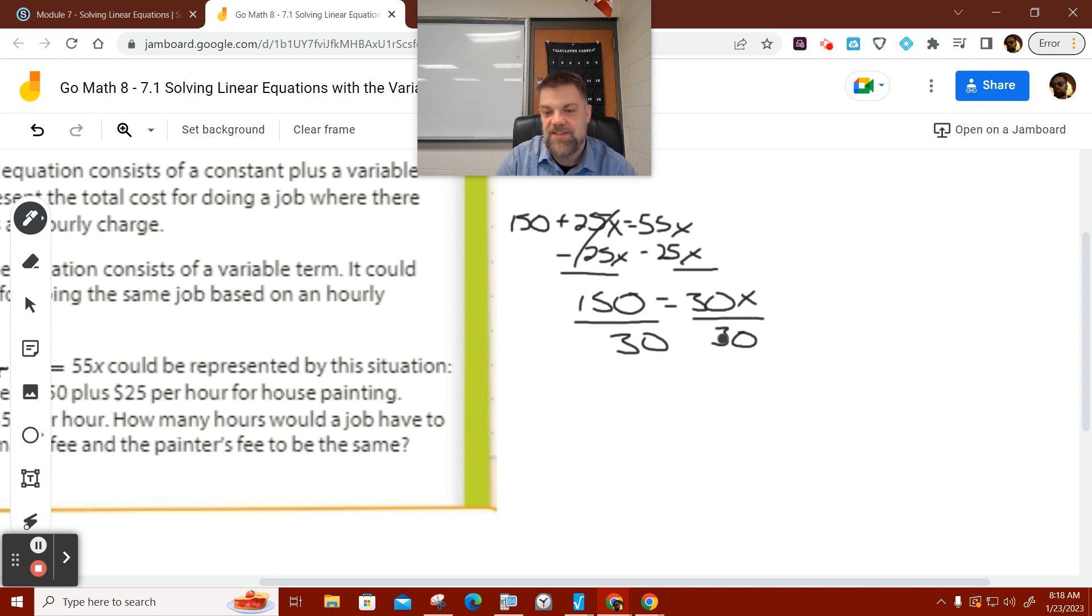So, anyway, 30 divided by 30 is 1. 1 times X is just X. What's 150 divided by 30? 50. So, 50 hours. At 50 hours, it costs the same.